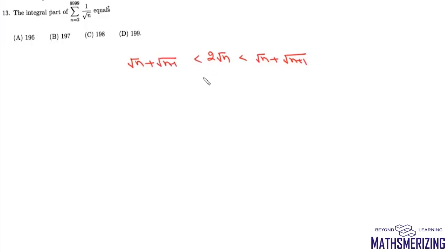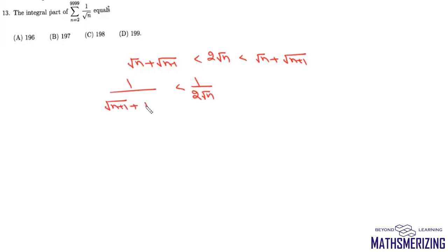Now we'll take the reciprocal. Then we can write 1/(2√n) is greater than 1/(√(n+1) + √n), and it will be less than 1/(√n + √(n-1)).